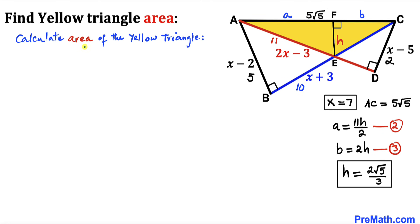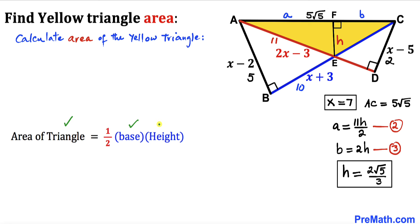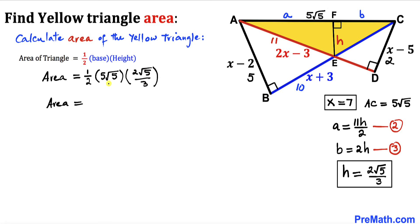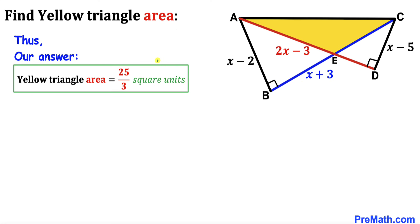Now calculating the area of the yellow triangle using area equals one half times base times height: area equals one half times 5 times square root of 5 times 2 times square root of 5 divided by 3. Simplifying: the area equals 25 divided by 3 square units. Thanks for watching and please subscribe to the channel for more exciting videos.